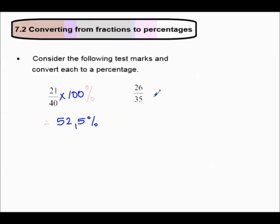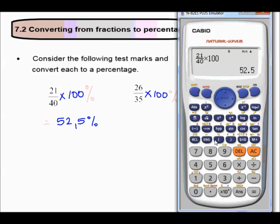Convert 26 over 35, or 26 out of 35 to a percentage. So we multiply by 100 percent. 26 out of 35, multiplied by 100. No percentage sign. That gives 74.2857.